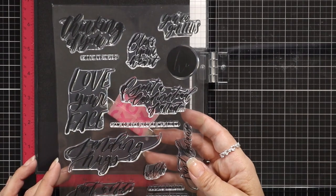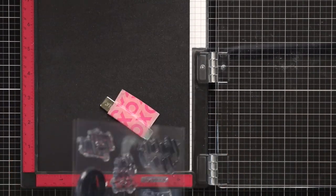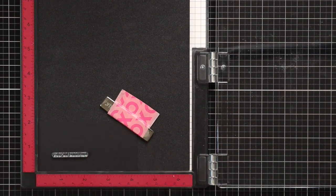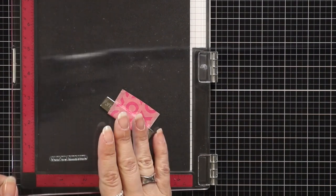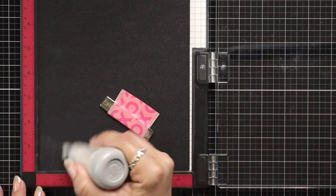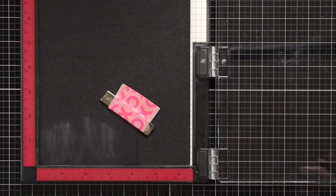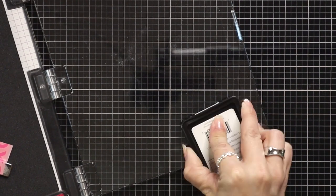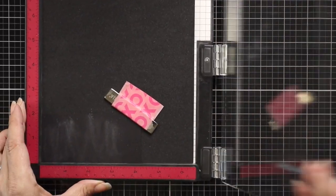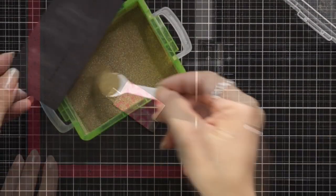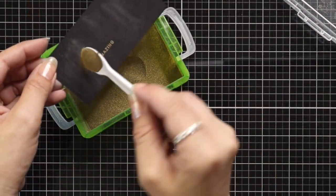So I'm going to set it off on the side and work on my sentiment and that is using the Just Because stamp set. I also have a piece of black cardstock laid down in my MISTI. I picked one of the small sentiments, lined it up on the black cardstock. I'm going to prep that with an anti-static powder tool and then ink up that small sentiment with the embossing ink and stamp that down onto the black cardstock.